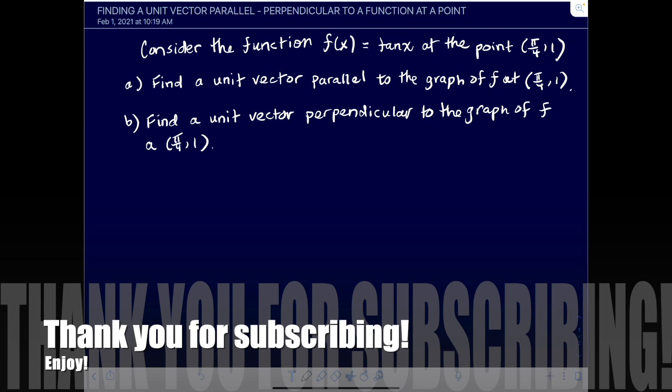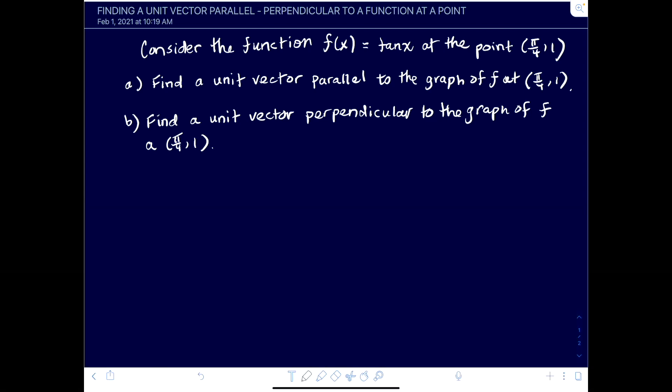Hey there, it's Shannon Mathczyk Myers and today we'll be looking at a short video which looks at some function, in this case f(x) = tan(x) at a given point. So tangent at π/4 has an output of 1, so the point is (π/4, 1). We want to find a unit vector first that's parallel to this graph at that point, and then we want to find a unit vector that's perpendicular to the graph at that point (π/4, 1).